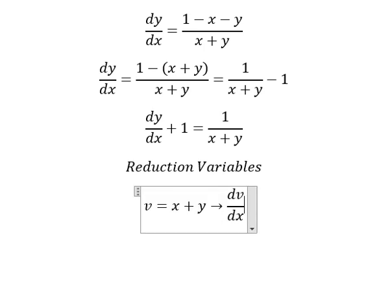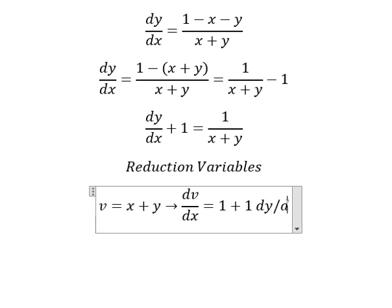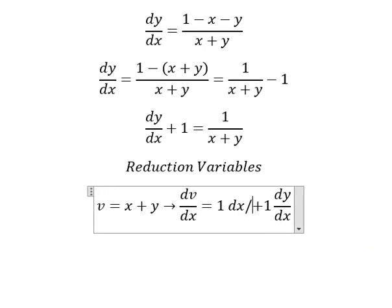And we have dv over dx. This one we have number one. This one we have number one, dy over dx. Because this one we have dx over dx, so that's why we have number one.